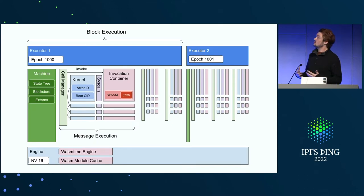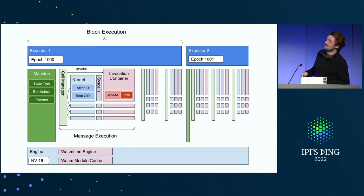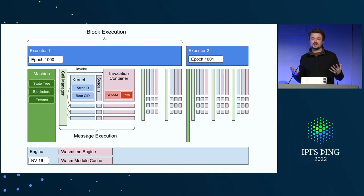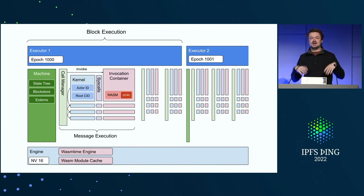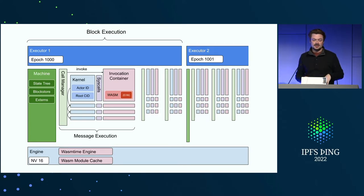This is the architecture. There are a lot of components, but let me walk through them. First, a quick recap of Filecoin: it's a blockchain with blocks, and those blocks have messages — also called transactions in some chains. To get the state of the next block, you take the state of the previous block, execute all the messages, and get a new piece of state — the new state of the world. Filecoin has tip sets, but that's basically the idea.